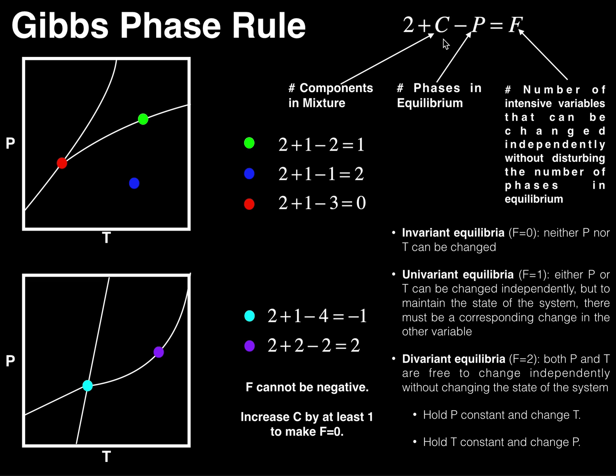It's the number of different molecules you have. If you just have pure water, it's one component. But if you mix water with ethanol, that would be two separate components, so your C would be two in that case.